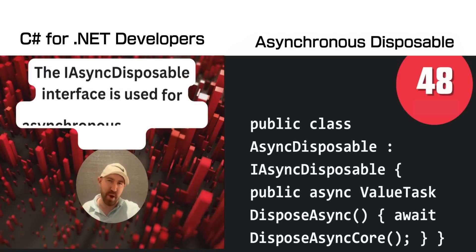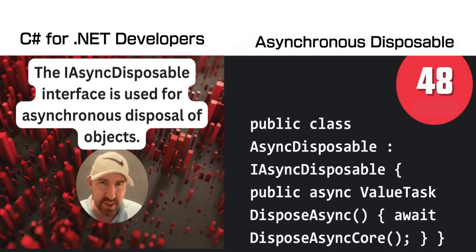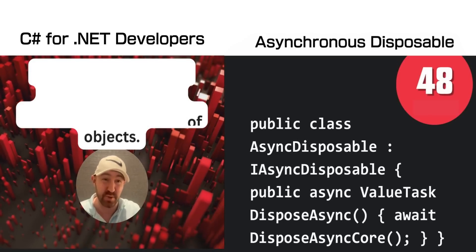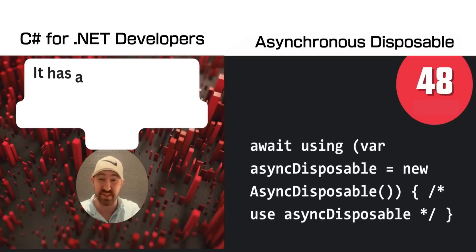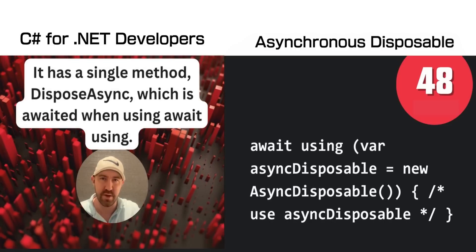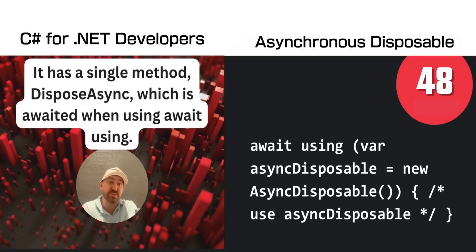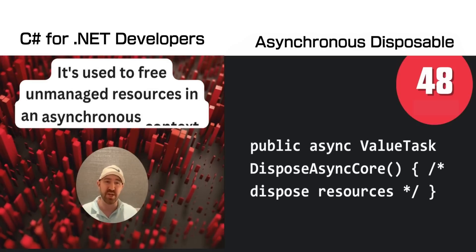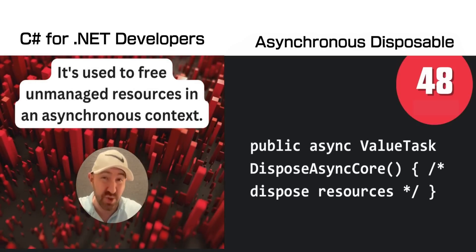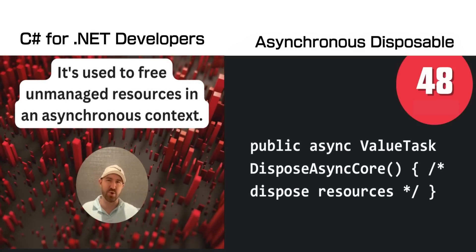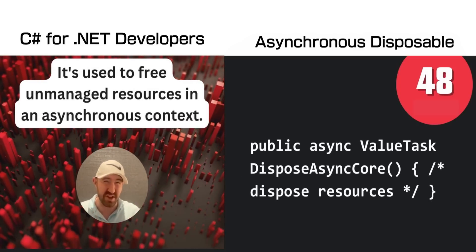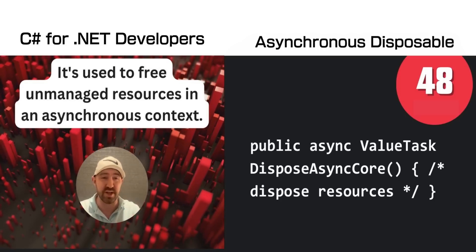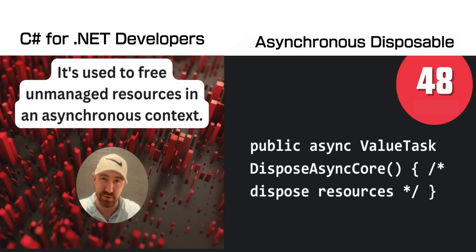In C#, you might be familiar with the IDisposable interface. IAsyncDisposable does exactly what it sounds like — it has a single method called DisposeAsync, which is then awaited using await using. If you want to keep your code base basically 100% asynchronous, as you should, this allows you to dispose unmanaged resources.